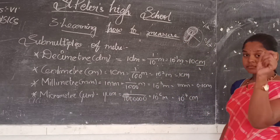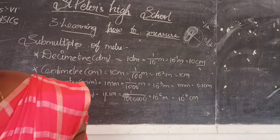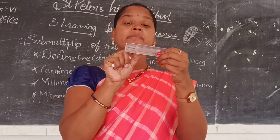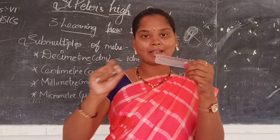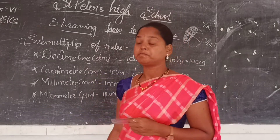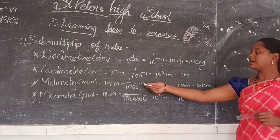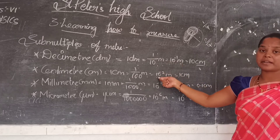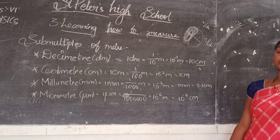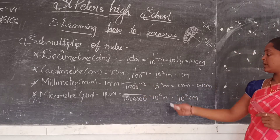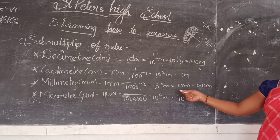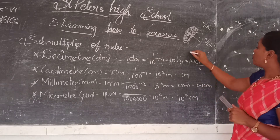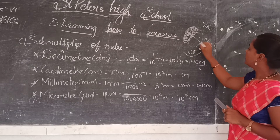Next is millimeter. We can see this on a scale — the numbers marked on the scale represent centimeters (the big lengths), and in between there are small divisions which are millimeters. One millimeter is 1/1000th part of the meter. Decimeter is 1/10th part, centimeter is 1/100th part, and millimeter is 1/1000th part — that is 10⁻³ meters. So 1 centimeter is equal to 10 millimeters.